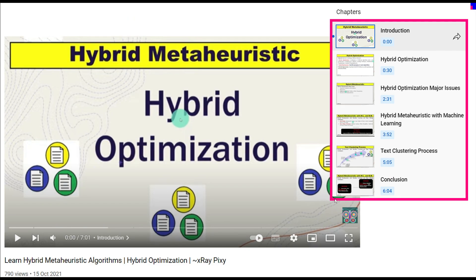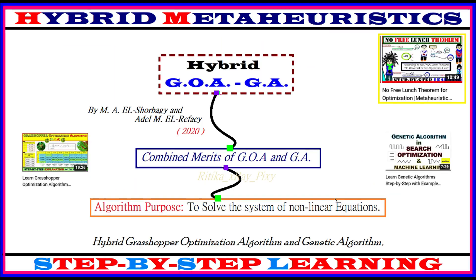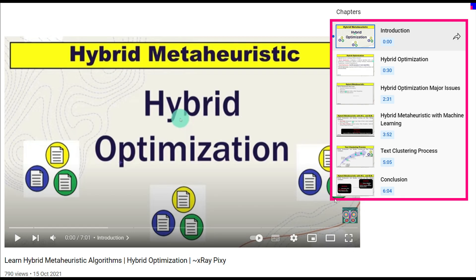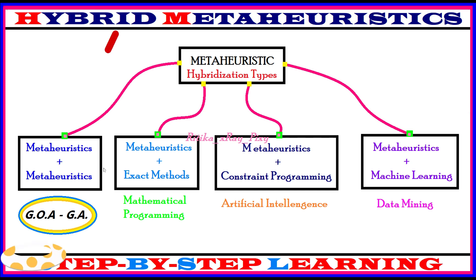Basic details about hybrid meta-heuristics have already been discussed in a separate video; the link is given below in the description or comments. In this video, we will focus on the hybridization of the grasshopper optimization algorithm with the genetic algorithm.